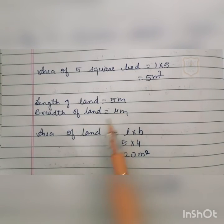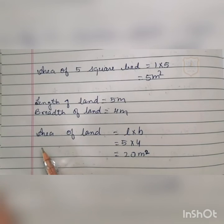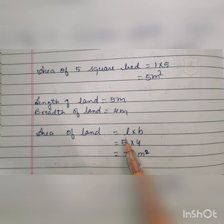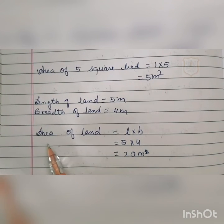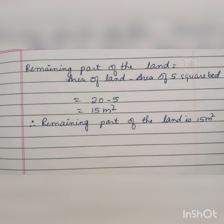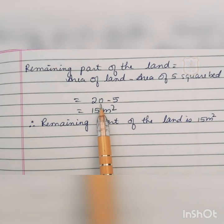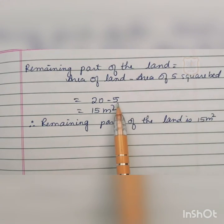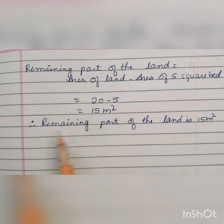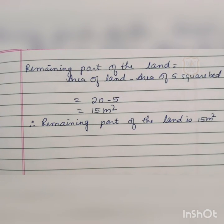The length of the land is 5 meters and the breadth is 4 meters, so the area of the land is L × B = 5 × 4 = 20 square meters. The remaining part of the land is area of land minus area of 5 square beds: 20 − 5 = 15 square meters. Therefore, the remaining part of the land is 15 square meters.